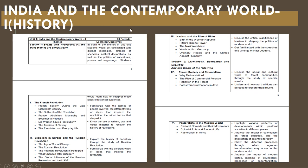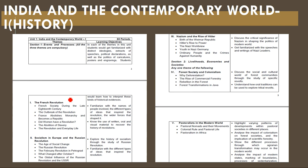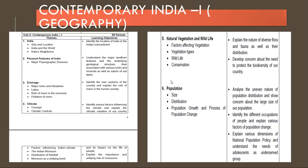This is the history part where you are going to study four chapters. Already one is done — the French Revolution. The second one will be Socialism in Europe, the third one Nazism and the Rise of Hitler, and the fourth one will be Forest Society and Colonialism, which I will teach this year.